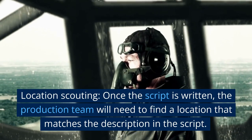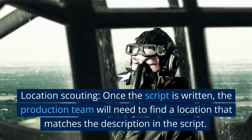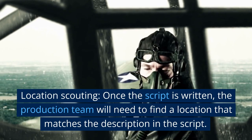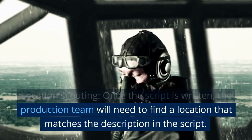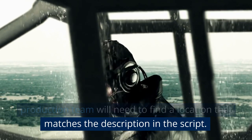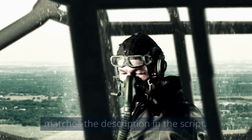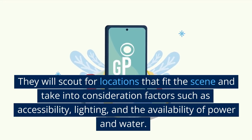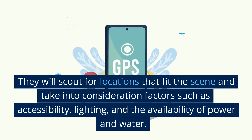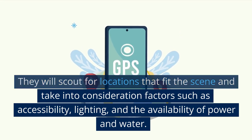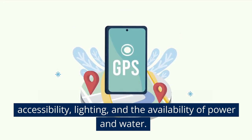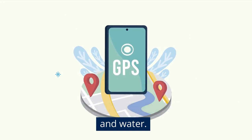Location scouting: once the script is written, the production team will need to find a location that matches the description in the script. They will scout for locations that fit the scene and take into consideration factors such as accessibility, lighting, and the availability of power and water.